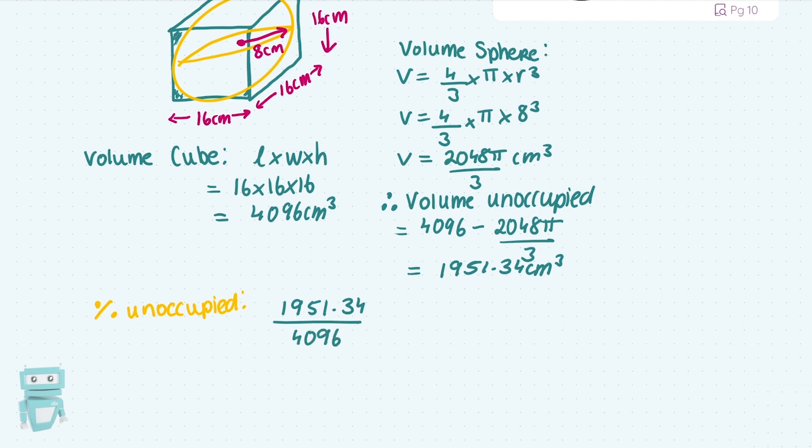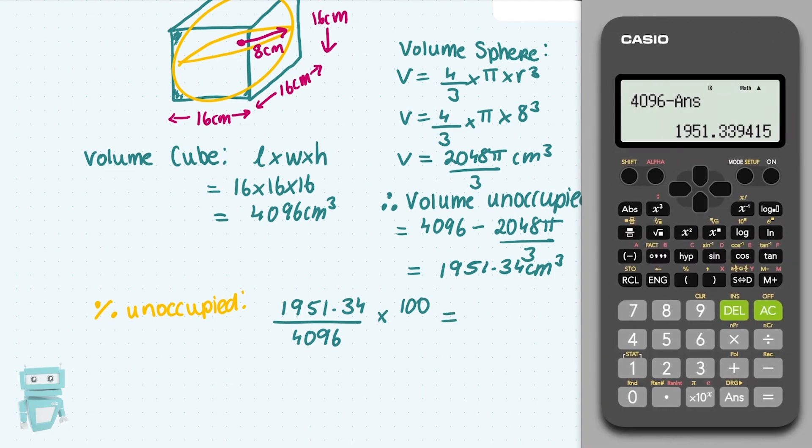And to make anything a percent, just times that fraction by 100. Once again, we can just simply divide by 4096, press equals, and then times by 100. Or if you're feeling brave, press your fraction button. Answer on the top, so your previous answer, 4096, and then times it by 100. And we get 47.64%.